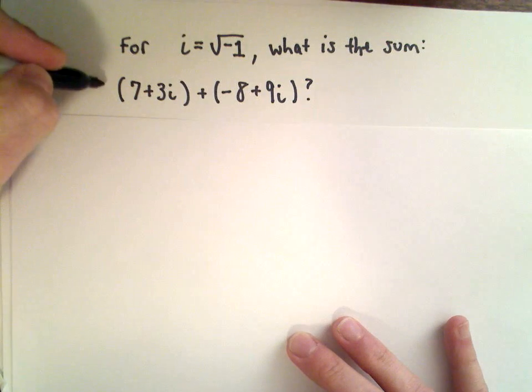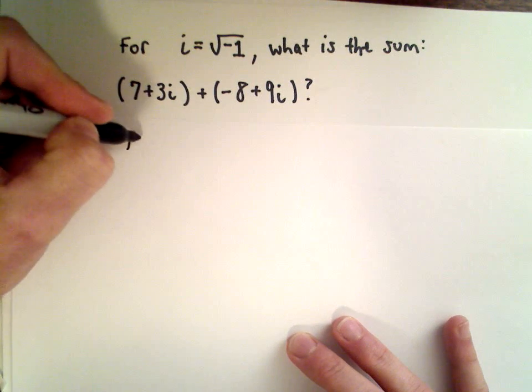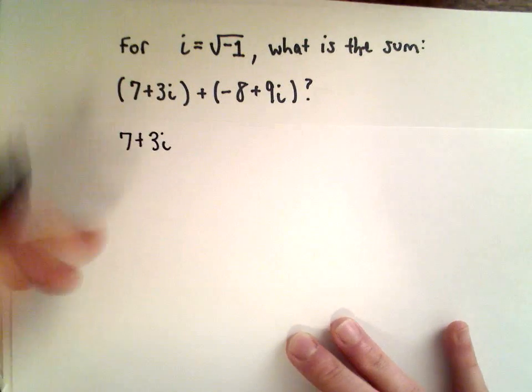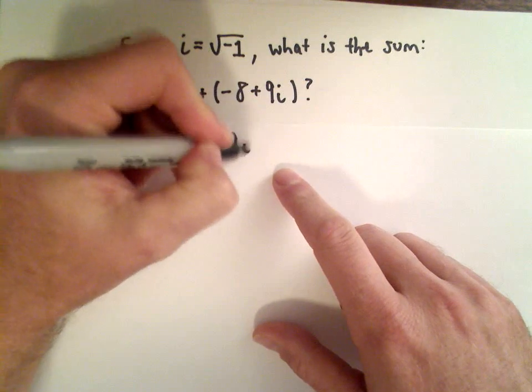So again, you can imagine that there's a positive 1 in front of both sets of parentheses. So if we were to distribute, we would have 7 plus 3i, and then we would have negative 8 plus 9i.